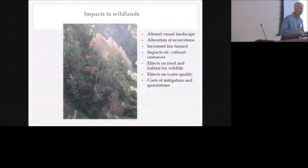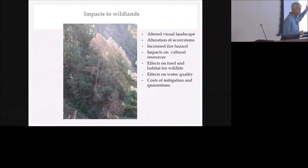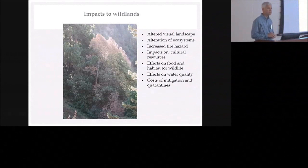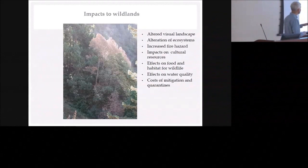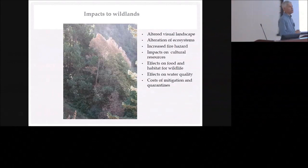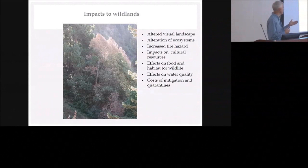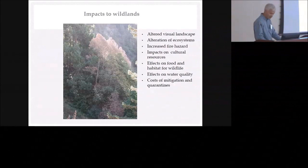Non-native insects and pathogens have a litany of problems they cause to our wildlands. They change the way forests look — this is an example of a sudden oak death killed pin oak. They change ecosystem functions, can increase fire hazard, and very importantly they impact cultural resources — trees that specific groups of people have depended on for hundreds if not thousands of years. They affect food and habitat for wildlife and water quality. And when these insects and pathogens show up, mitigations and quarantines are imposed, regulations proliferate, and it becomes harder to move products out of the forest.